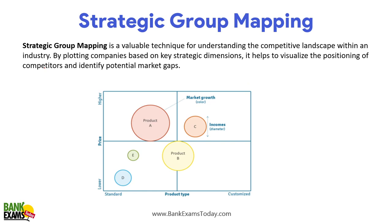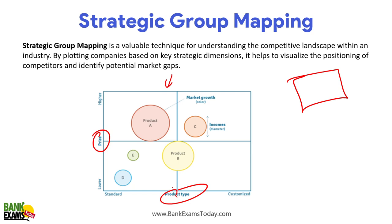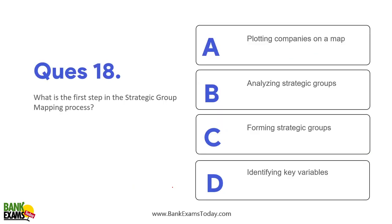Strategic group mapping is a valuable technique for understanding the competitive landscape. What you are doing is making a graph of your competitors and plotting them based on factors you have identified. For example, if making a strategic group map of competitors in the car industry, it can be according to price and features or product type. It helps you visualize the positions of competitors and understand your position in the market. The first step in the strategic group mapping process is to identify the key variables.